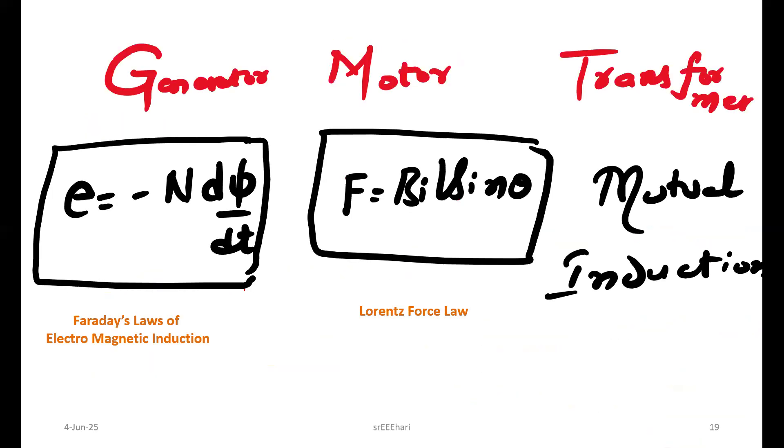Coming to unit 2, it's DC machine. We have generator, motor, and transformer. Generator only has principle as Faraday's law of electromagnetic induction.